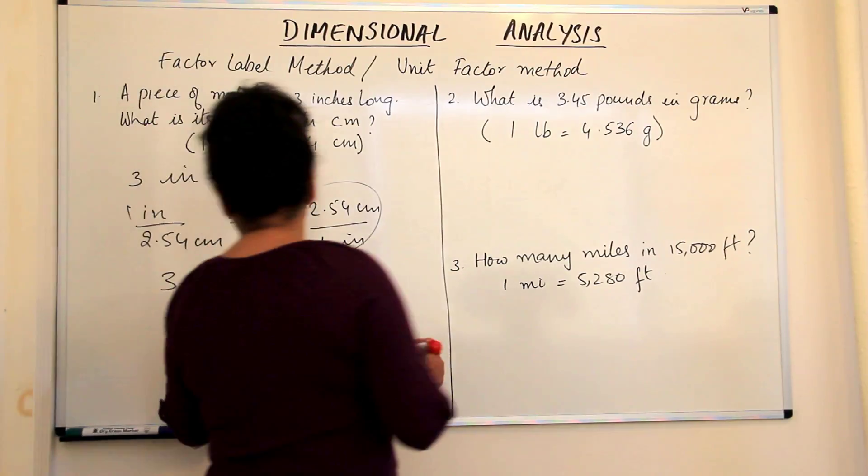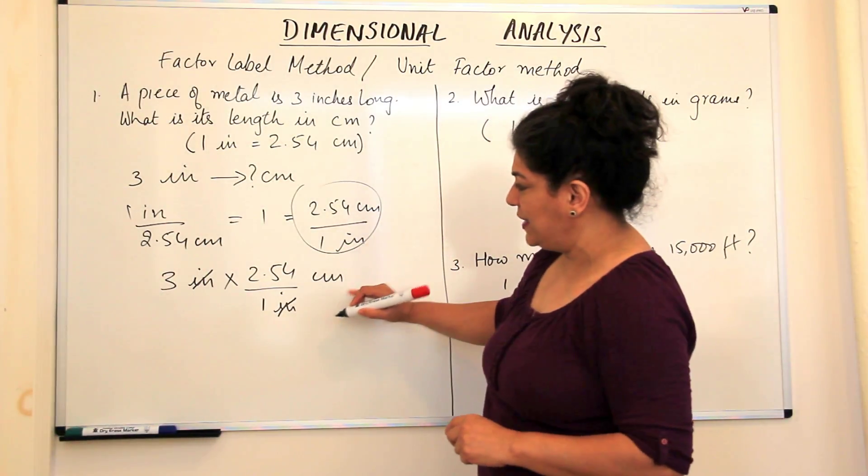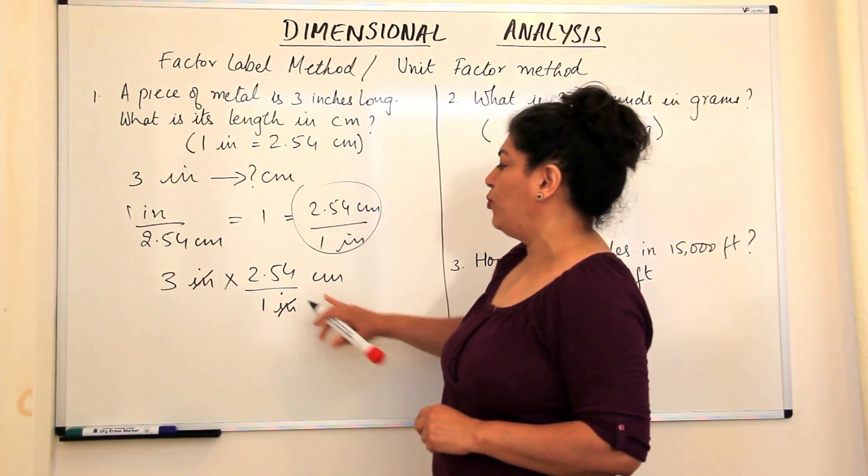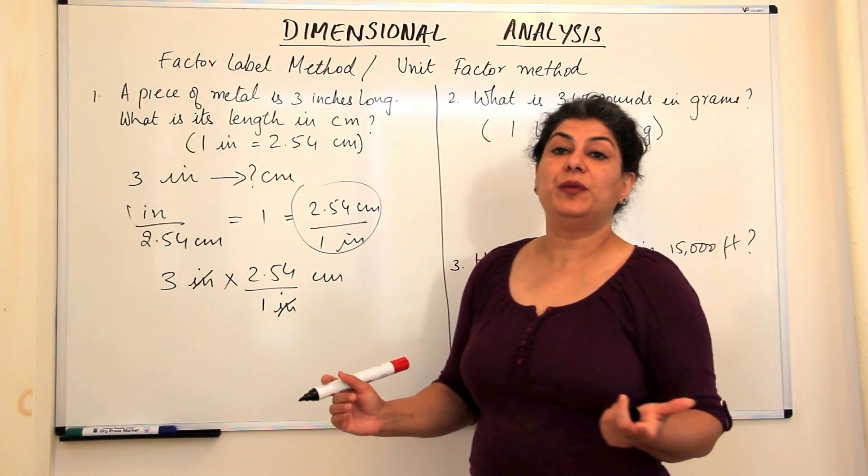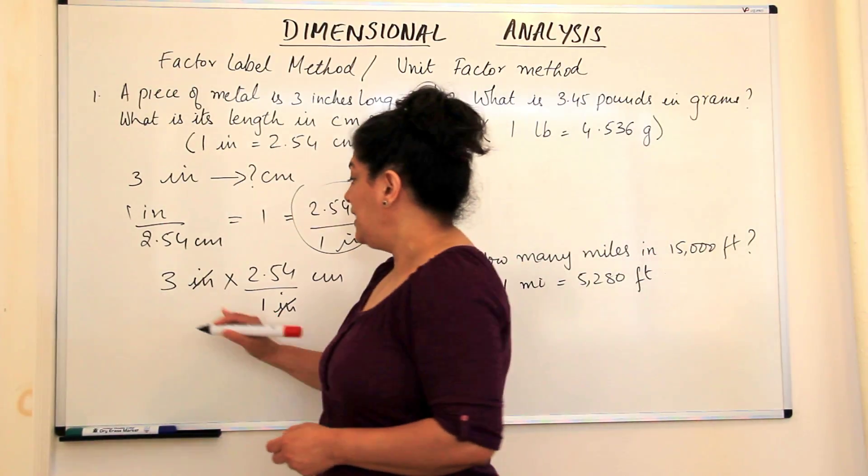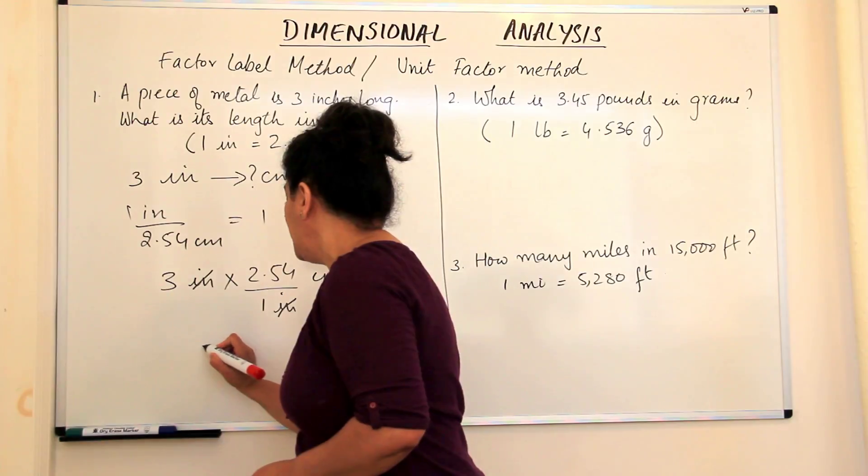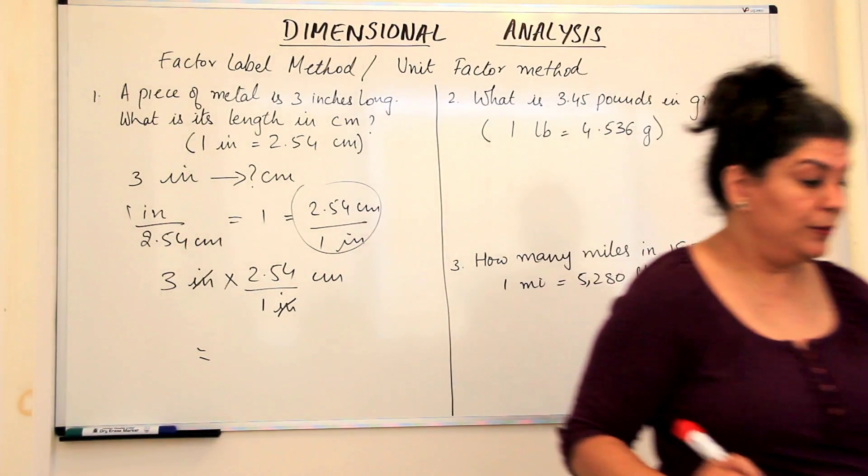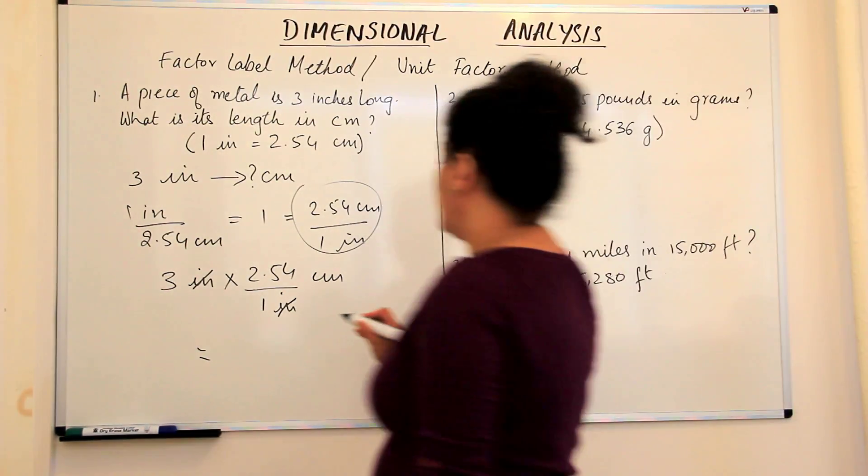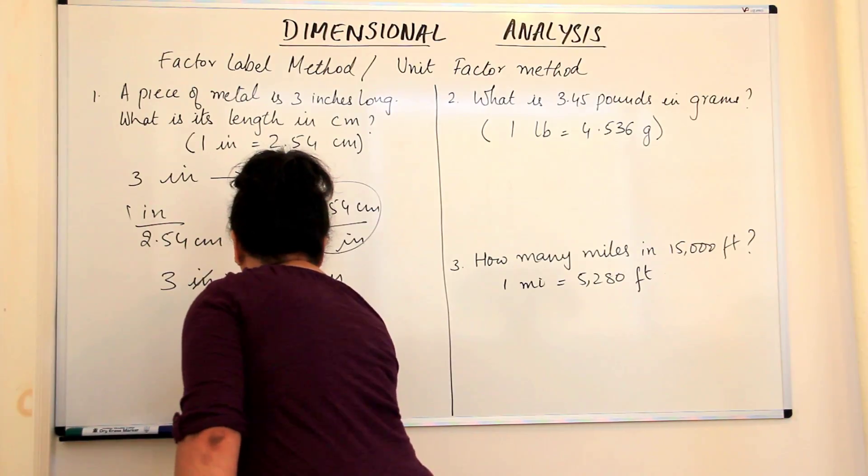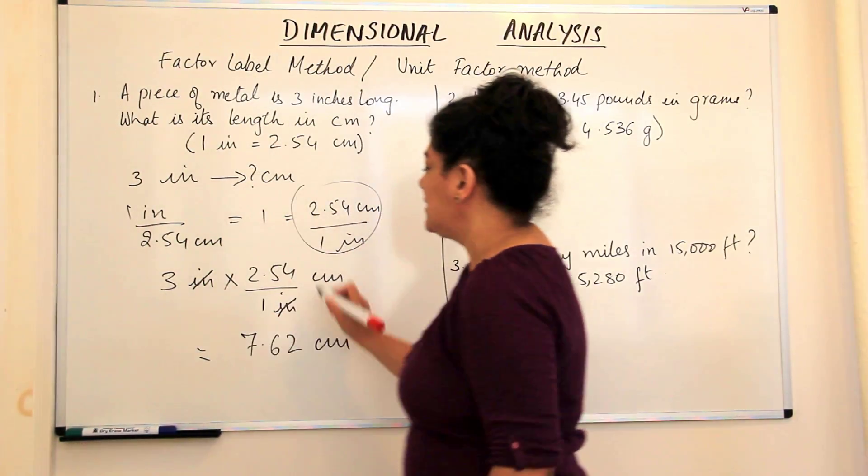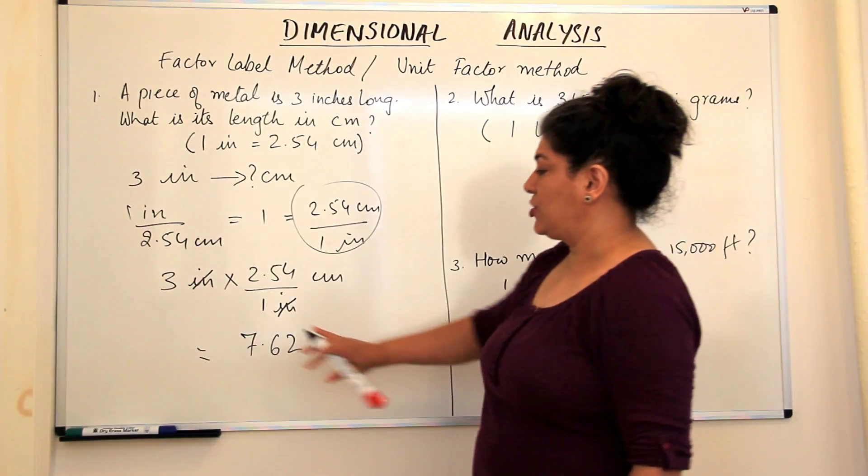The inch and inch is cancelled out, right? And numerically, what are we left with? We are left with centimeters, and 3 into 2.54 centimeters would be our answer. So 3 inches would be equal to how many centimeters? This would be equal to 7.62 centimeters.